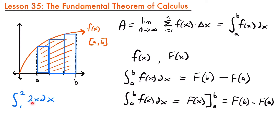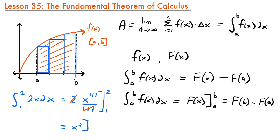For example, let's say we wanted to solve the definite integral from 1 to 2 of 2x dx. Our function is 2x, our lower bound is 1, and our upper bound is 2. These can also be called the limits of integration. If we go through and integrate this function, we start by finding the antiderivative using the power rule: 2 times x to the power of 1 plus 1, divided by 1 plus 1. Simplifying, the 2's cancel and we're left with x squared, evaluated from 1 to 2.